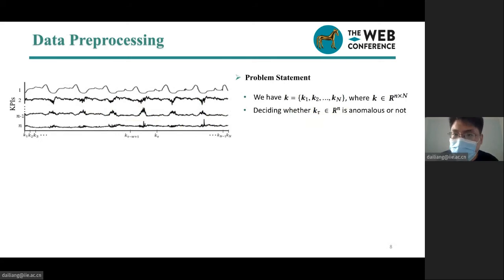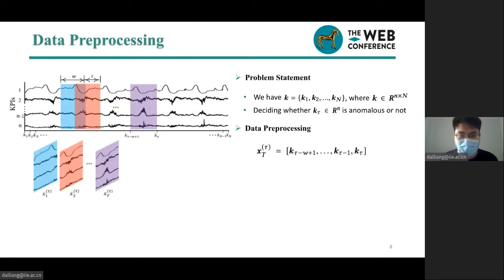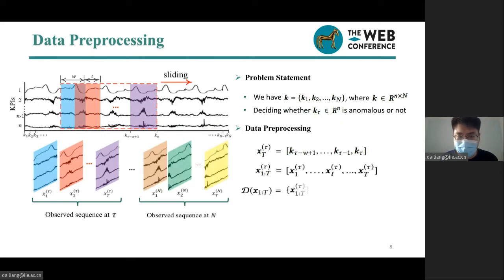Now we have the multivariate KPIs. Our goal is to determine whether an observation at a certain time step is anomalous. Here we show the detailed procedure of data preprocessing. We first get a series of observed variables that constitute an observed sequence. With the window sliding at one step, we get our training and testing datasets.